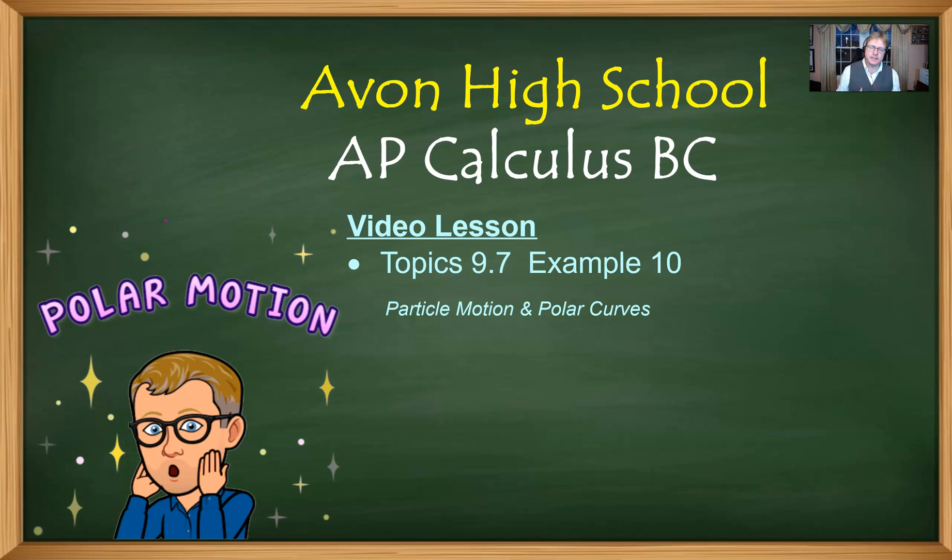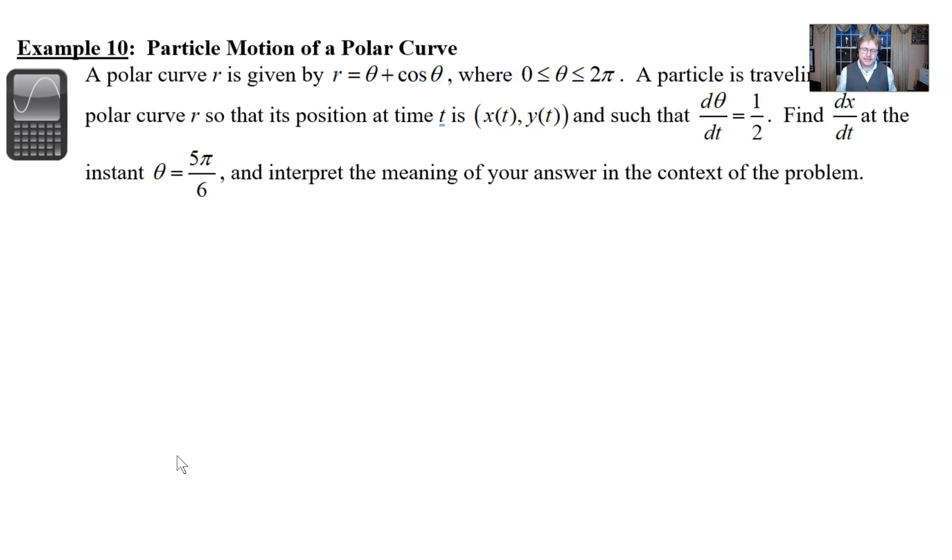We first introduce the idea of polar curves and we start injecting a little bit of calculus in it. And I've got a really good problem here for you in Example 10 that merges not just an older idea from earlier, maybe in BC, but an idea that goes all the way back to Unit 4 from AB Calculus. It makes it a very applicable problem for what one could see on the AP exam, possibly. So let's take a look at how particle motion can interweave a bit with polar.